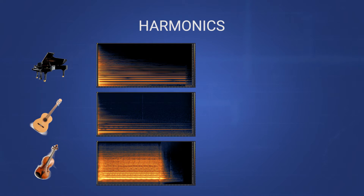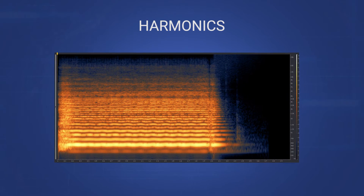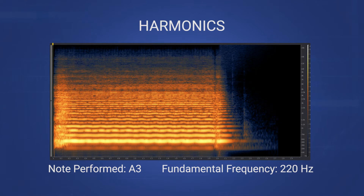Returning to our original spectrograms, you can see the strength and duration of individual harmonics all help to define the characteristics, or timbre, of the given instrument. Notice how the violin's fundamental is nearly inaudible. It has more emphasis in the higher harmonics, resulting in a harsher or more nasally timbre when comparing it to the guitar or piano.